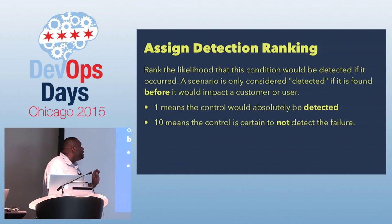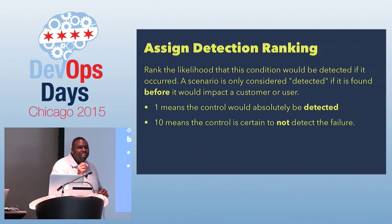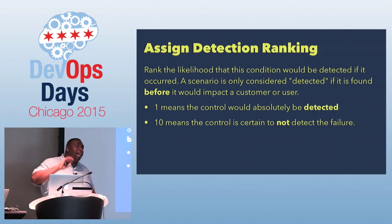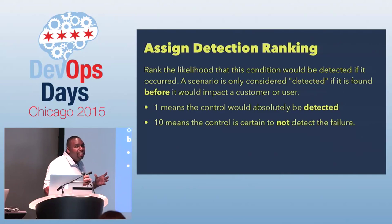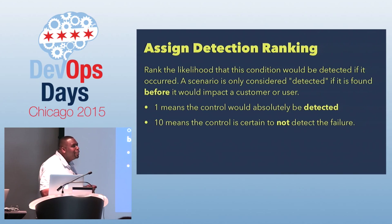Then there's the detection ranking, and this is important because people miss the key question: would you detect it prior to a customer detecting it? And that customer could be the person sitting down the hall from you — your business customer — or someone in Wyoming trying to order a pizza in the middle of the night. What is the likelihood that you would detect this problem prior to them finding out? In a lot of cases, you realize you would never detect it before the customer. How many people have a system whose monitoring is basically their customer calling and yelling?